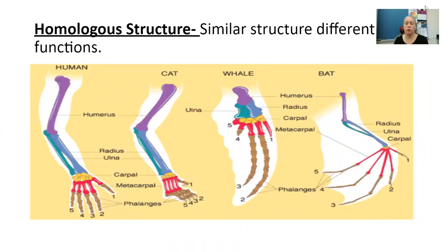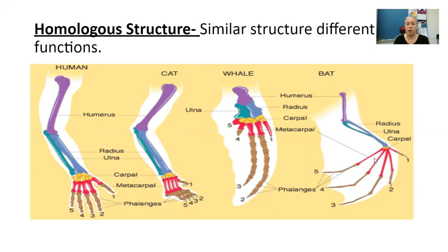Let's talk a little bit more about those homologous structures. They are similar structures but with different functions. Here you're looking at humans, cats, whales, and bats. I love this graphic because it's color-coded and labeled, so you can see that they all have the same structures, but those structures have very different functions. In a human, this is our arm. In a cat, this would be its forelimb. In a whale, we're going to have a fin. And in a bat, this is going to become the wing. So very different functions.